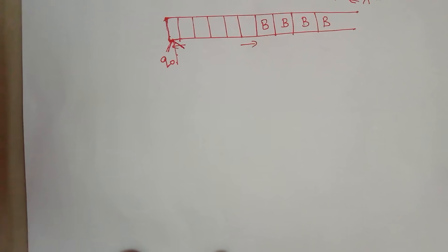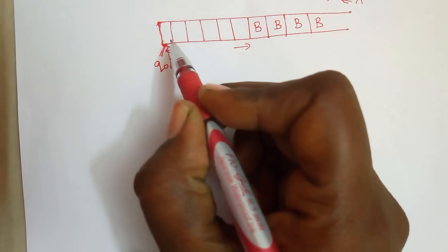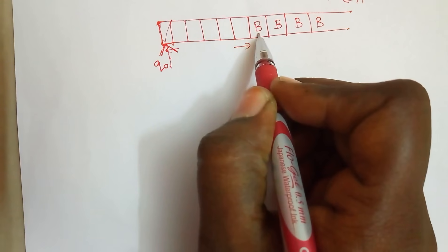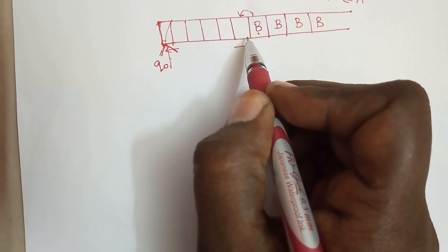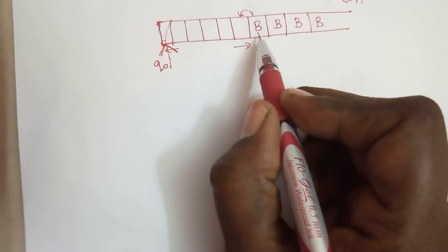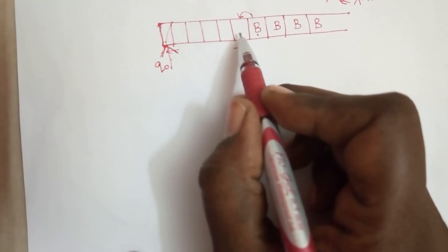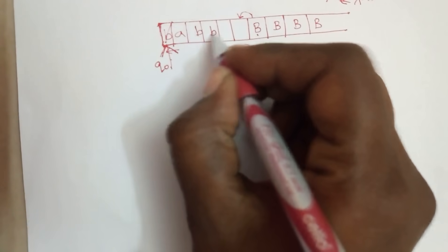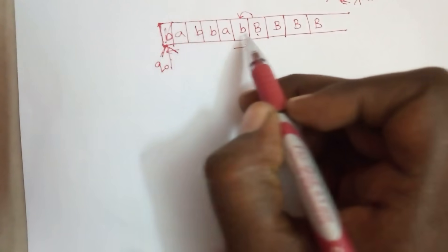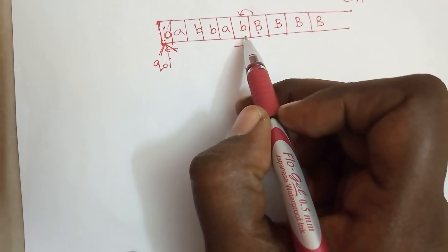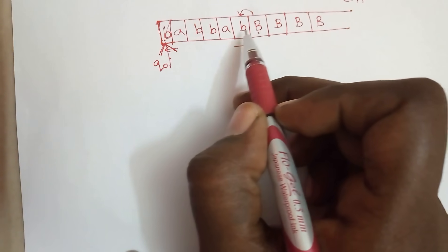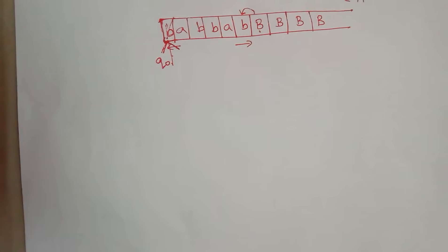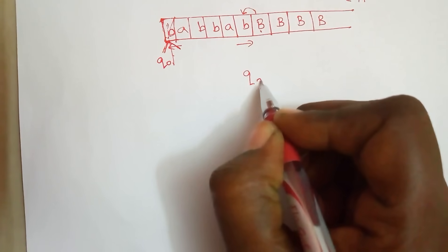For palindrome checking, the idea is: we check the first element, cancel it, and move right until we find a blank symbol. Once we find a blank symbol, we move one step left and take the last element. For example, for input B, A, B — the first B and the last B should be the same. The element prior to the blank symbol is the last element of the input.